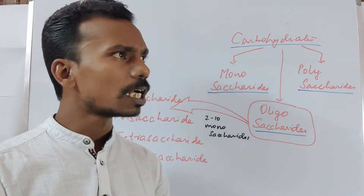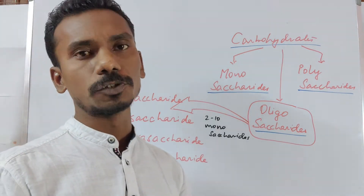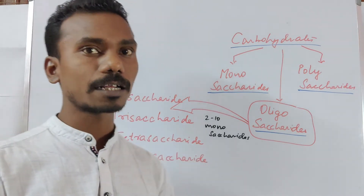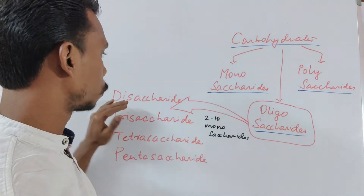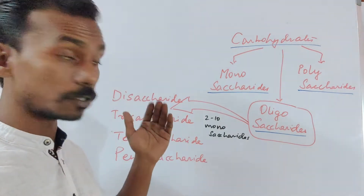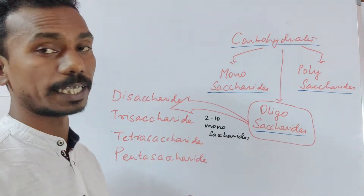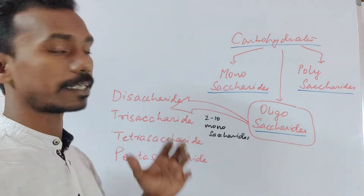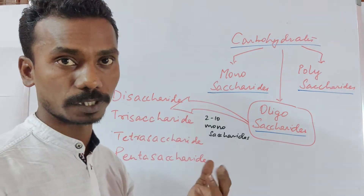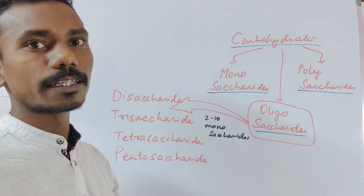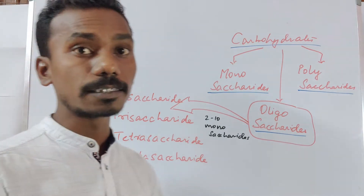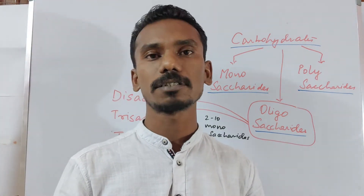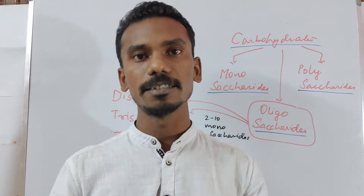In this video, we'll be discussing the bonds used to make disaccharides from two monosaccharides, and trisaccharides from three monosaccharides. Let's see the concept of the glycosidic bonds behind these structures.